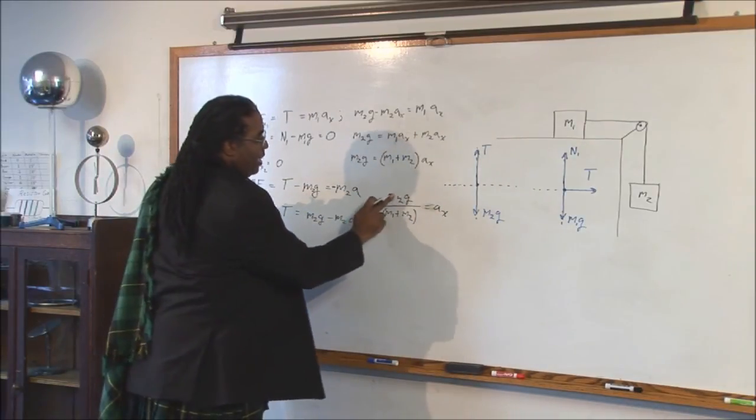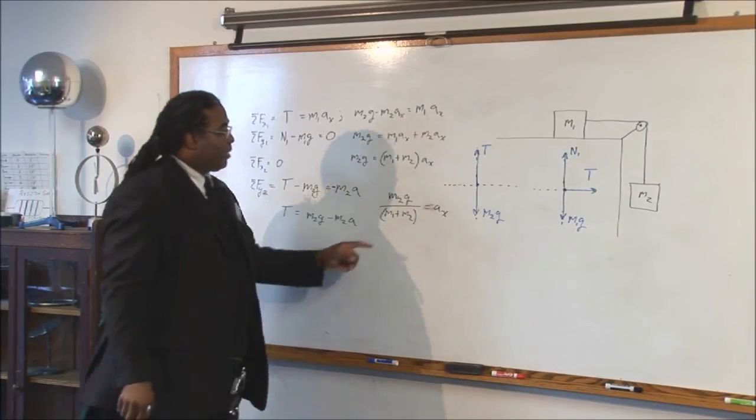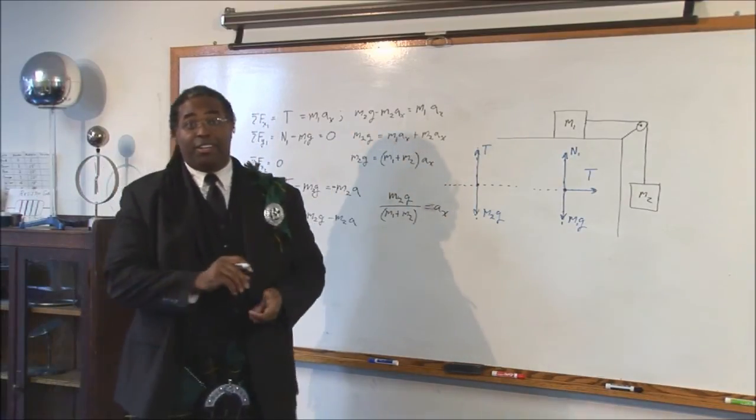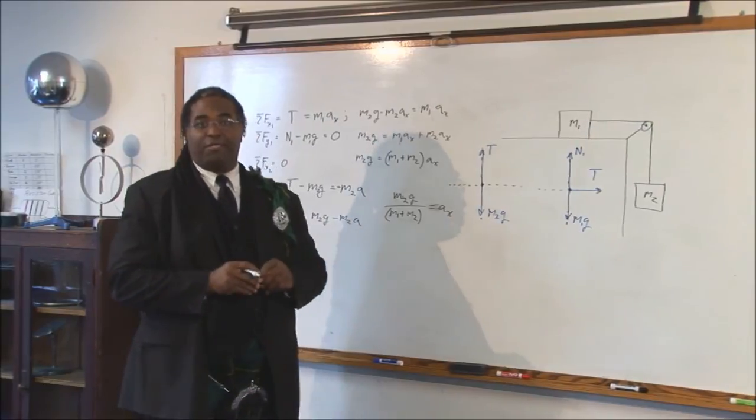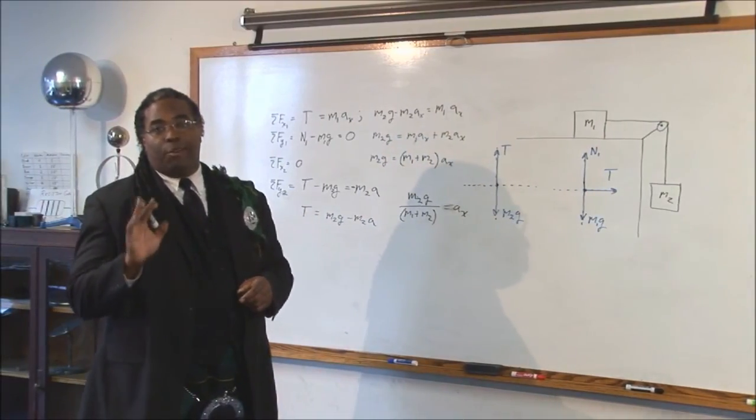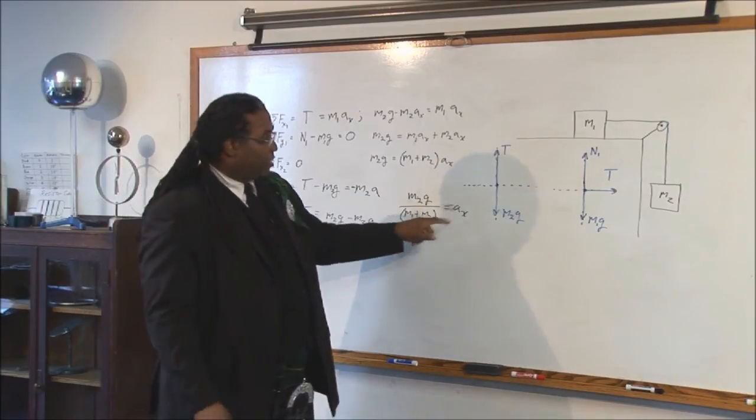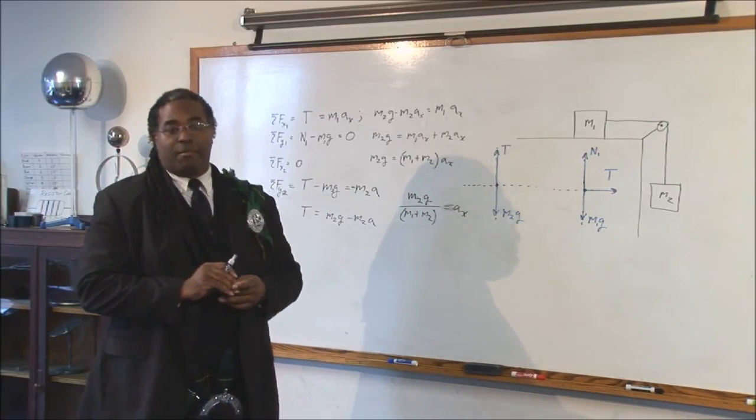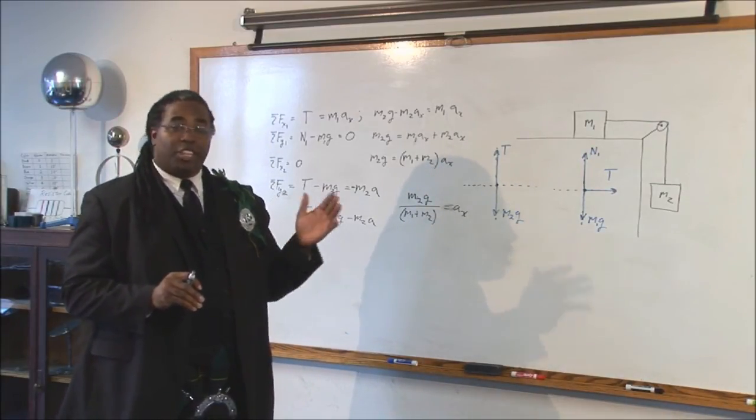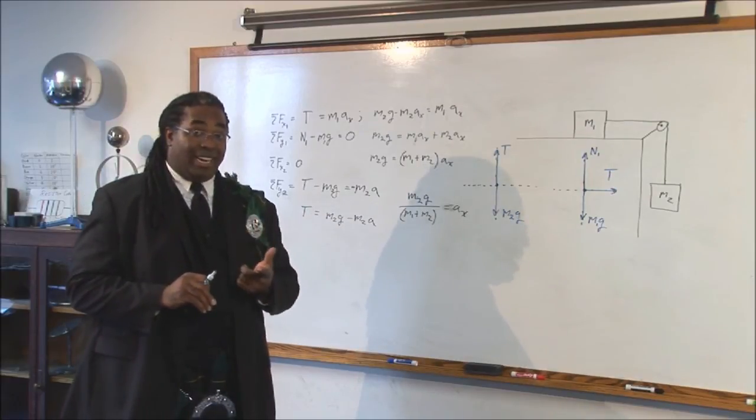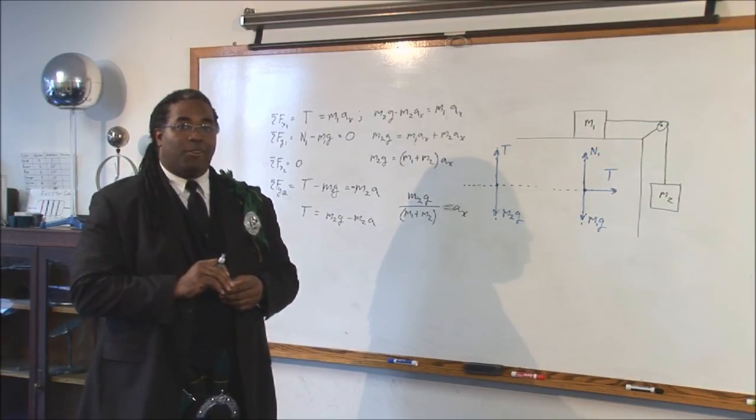And once again, now you can plug your numbers in to get your answer. Remember, no numbers without units. If the units don't come out to be meters per second squared, you probably made a mathematical mistake somewhere. Check your work. So, again, writing units is a good way of checking your work.